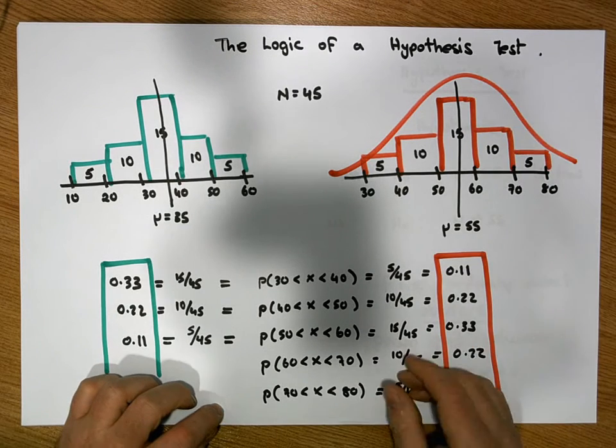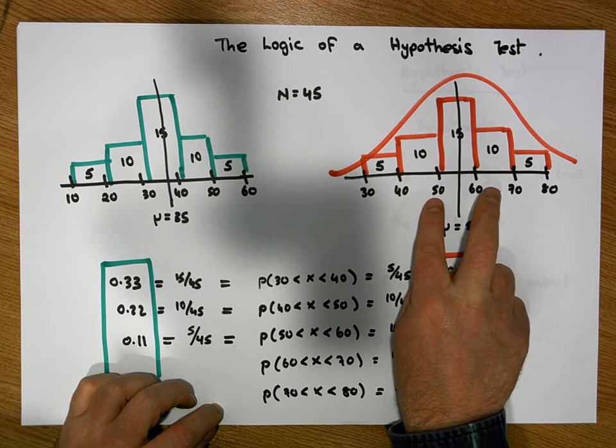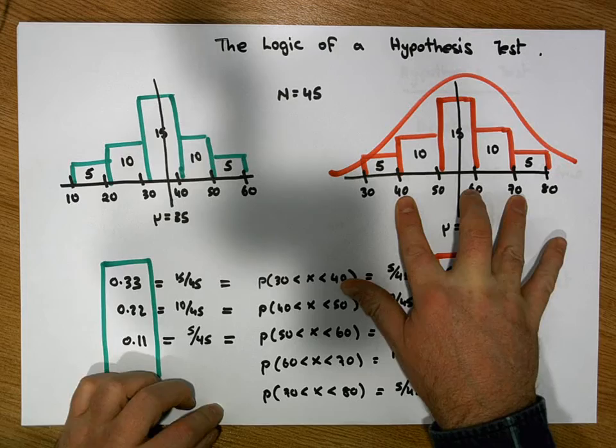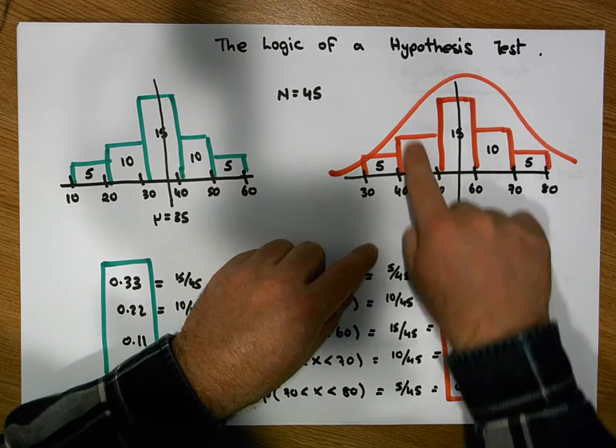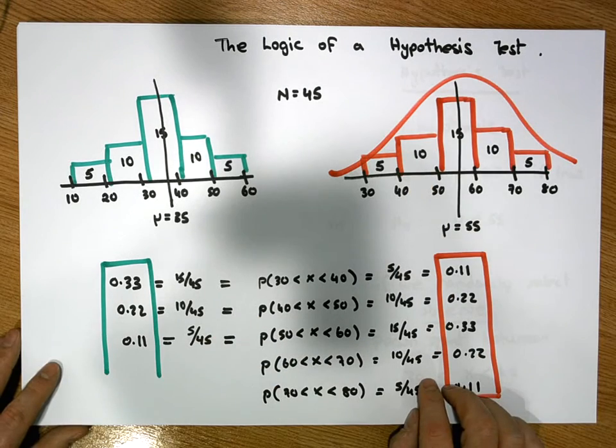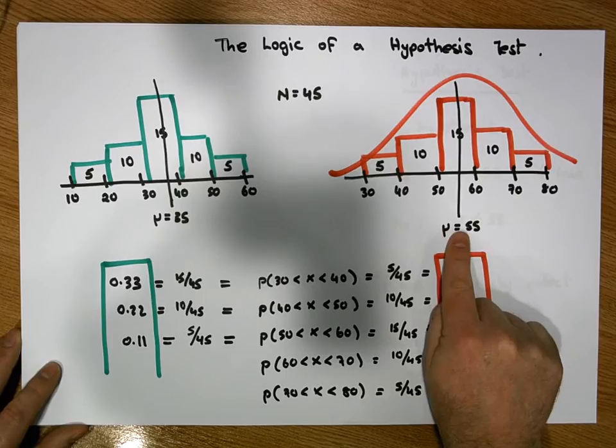Well, what would more than likely happen is that as I randomly select, I would more than likely observe people between 50 and 60 or between 40 and 70 rather than observing somebody between 30 and 40, simply because there's more people in this particular area of the curve. That's if the mean was positioned on 55.